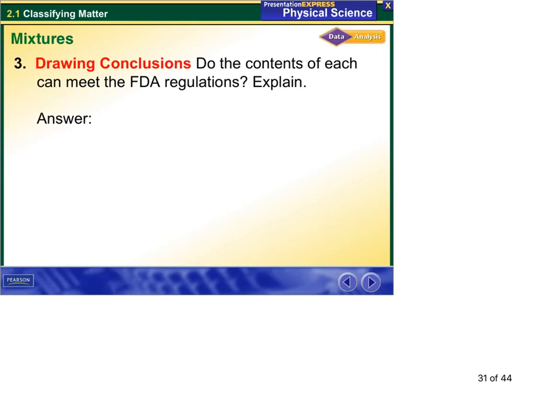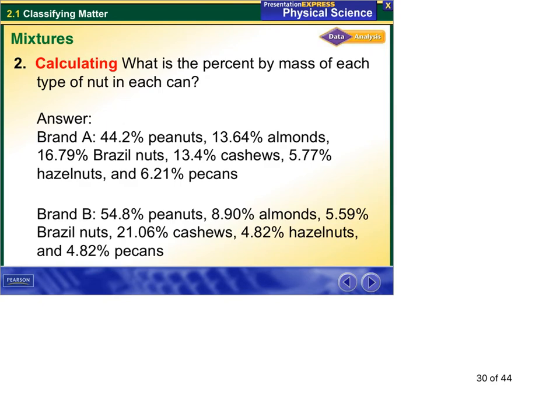And do the contents meet FDA regulations? So we'll back up and look at those amounts again. And said they had to be at least 2%, no more than 80%. And you can see they're all between 2 and 80. And they had to contain at least four things besides peanuts. And we got one, two, three, four, five. So we got those.